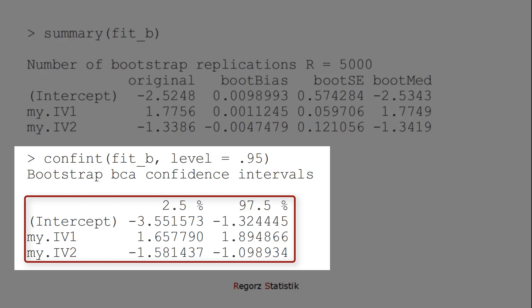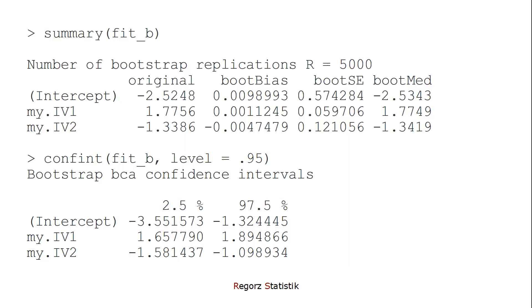If a confidence interval does not include zero, then it's significant. So here we have a significant intercept and two significant predictors. Thanks for watching.